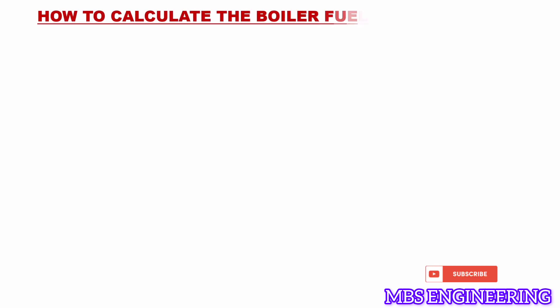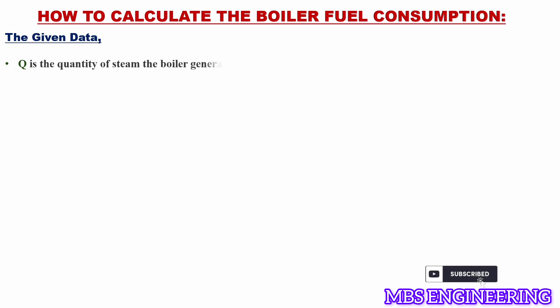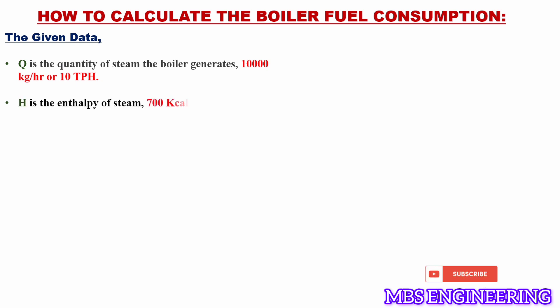We will now learn how to calculate the boiler fuel consumption. The given data is: Q, the quantity of steam the boiler generates, is 10,000 kilograms per hour or 10 tonnage per hour. Capital H, the enthalpy of steam, is 700 kilocalories per kilogram. Small h, the enthalpy of water, is 85 kilocalories per kilogram.